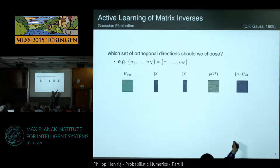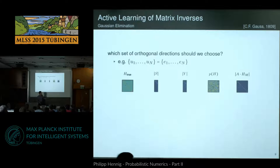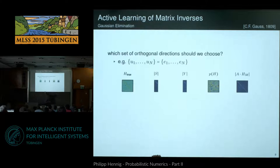This whole very complicated probabilistic process was a probabilistic way of motivating Gauss-Jordan elimination. So now it's not 1803 anymore — it's 1809 and we've caught up with Gauss and basically discovered how to do this algorithm. It's 2015 and I've just spent 30 minutes re-deriving an algorithm you learned in high school. Is that interesting?